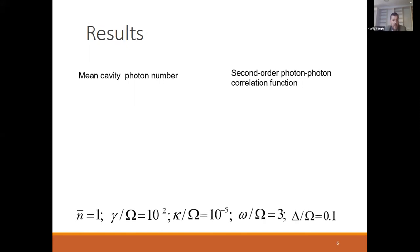The parameters of interest: n-bar is the mean photon number of the surrounding thermal thermostat, gamma is the decay rate of the atom, kappa is the leaking rate of the cavity, omega is the frequency, and delta is the detuning between the laser and the transition frequency of the two-level system.